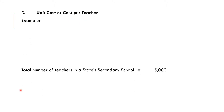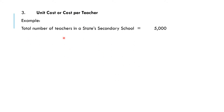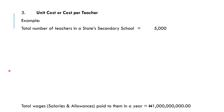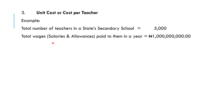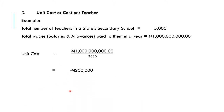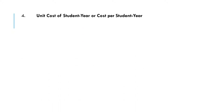Now let's look at the unit cost per teacher. Assume the number of teachers in the state secondary school system is 5,000, and the total amount expended on salaries, allowances, and everything was 1 million naira. Dividing 1 million by 5,000 gives 200 naira — meaning for each teacher, 200 naira was spent.